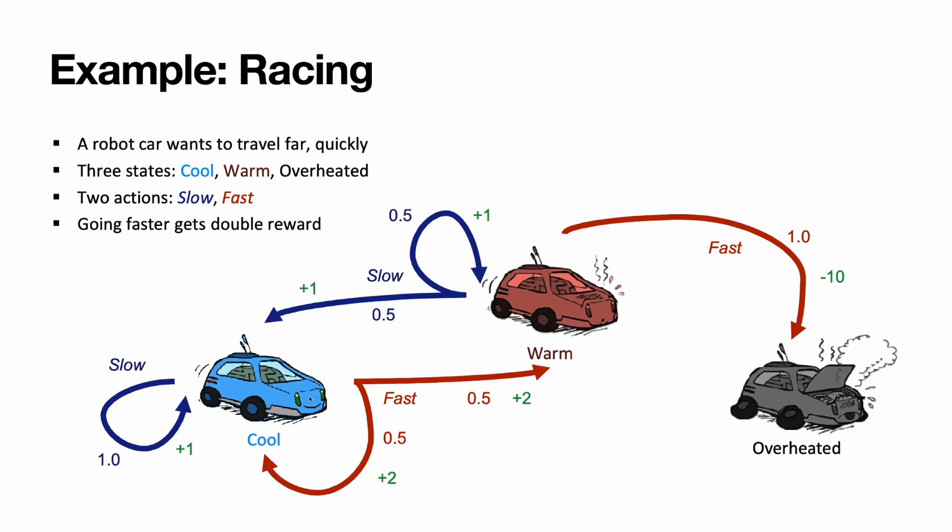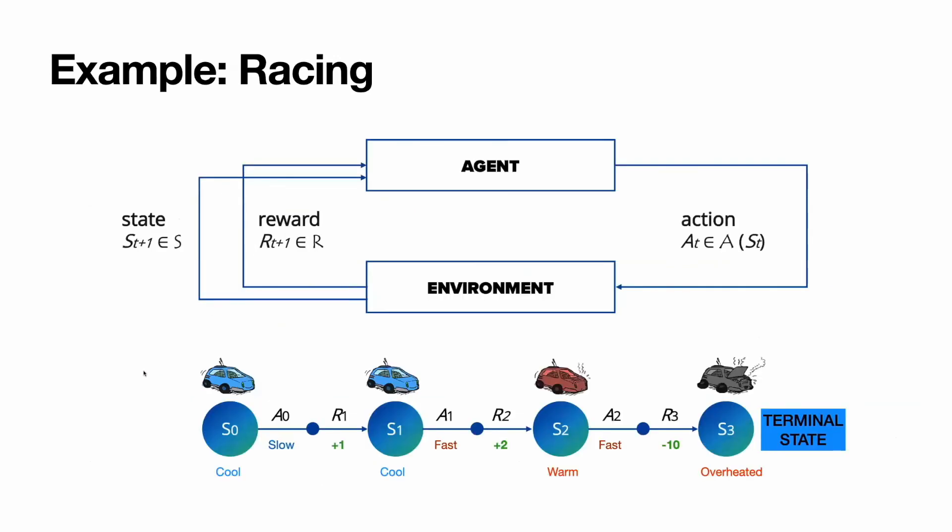If we put this example on the diagram I presented before, it will look like this. Imagine that our initial state was cool, then we performed action slow, received reward plus 1, and appeared in a state S1, which is also cool. But then we tried to move fast and got guaranteed reward plus 2, but then hit a chance of 50% getting warm, got warm, transitioned to the S2. Being in S2, decided to move fast again.